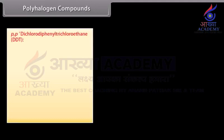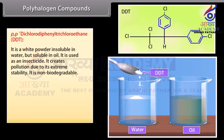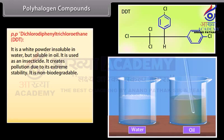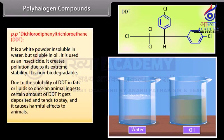PP-dichlorodiphenyl trichloroethane — DDT: it is a white powder, insoluble in water but soluble in oil. It is used as an insecticide. It creates pollution due to its extreme stability and is non-biodegradable. Due to the solubility of DDT in fats or lipids, once an animal ingests a certain amount of DDT, it gets deposited and tends to stay, causing harmful effects to animals.